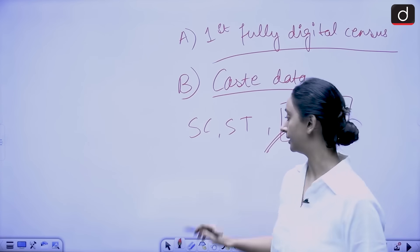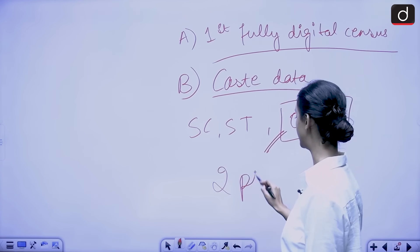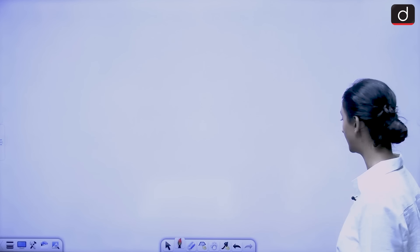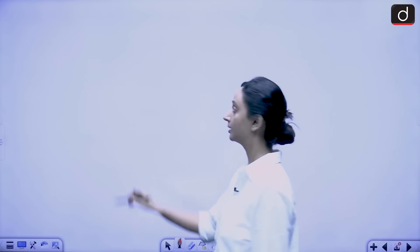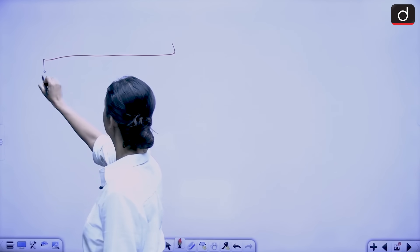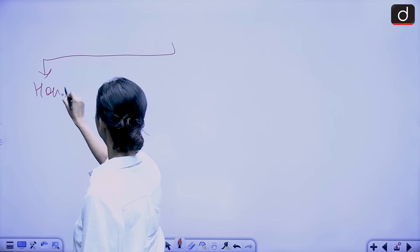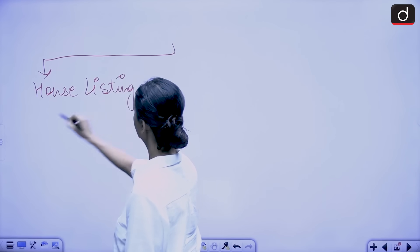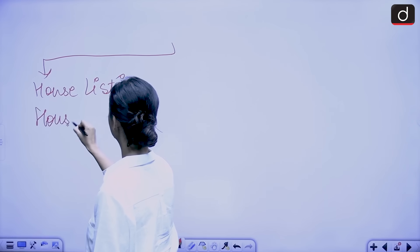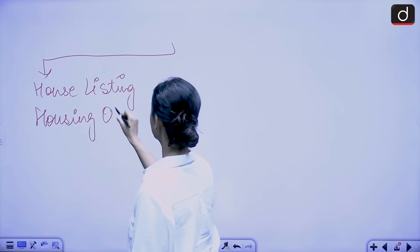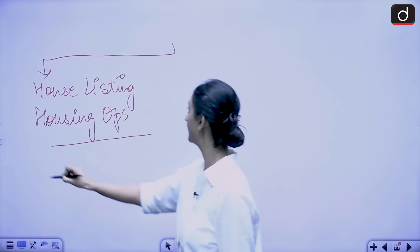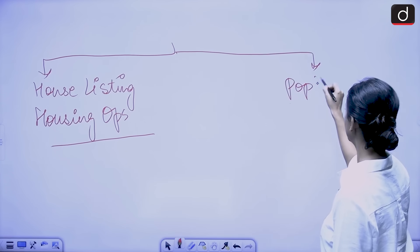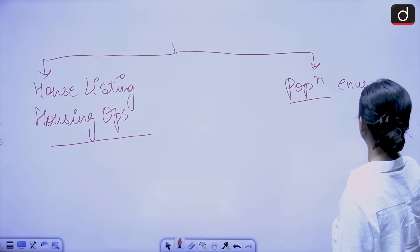This population census exercise is going to be conducted in two phases. The first phase is the house listing and housing operations phase, and the second phase is the population enumeration phase.